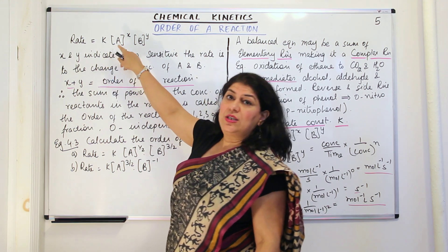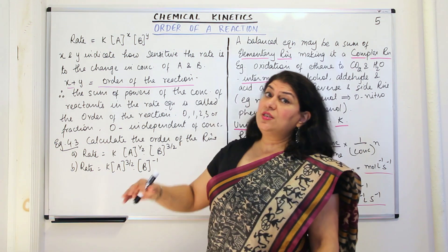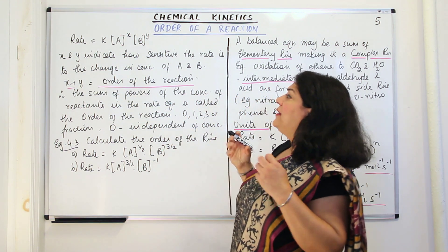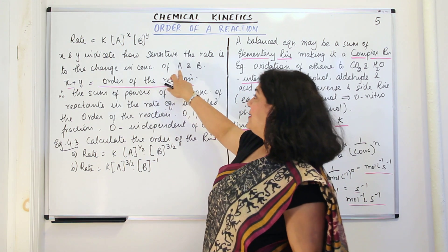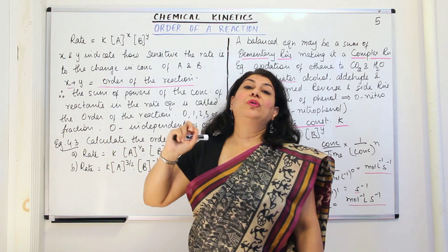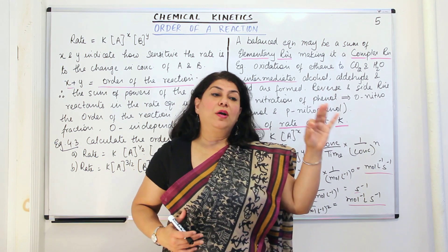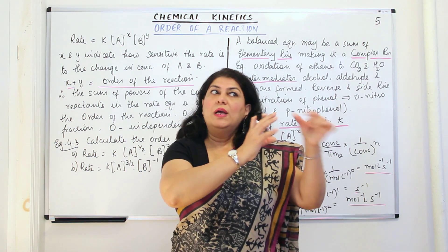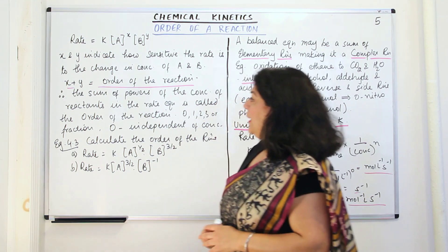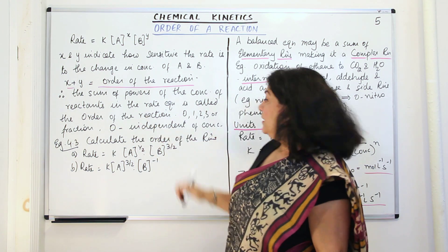The rate is equal to rate constant into A and B, which are reactants raised to certain powers on which depends the rate of the reaction. So x and y indicate how sensitive the rate is to the change in concentration of the reactants A and B. And the sum of these powers is known as the order of a reaction. So in the rate law or the rate equation, whatever powers the concentrations of the reactants have been raised to, the sum of those powers is the order of a reaction. That is defined as the order of the reaction.